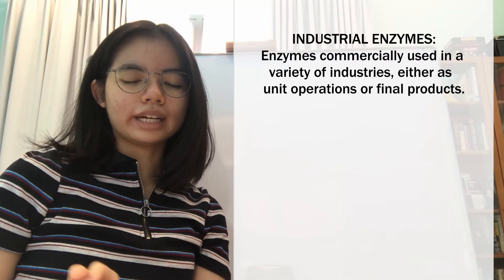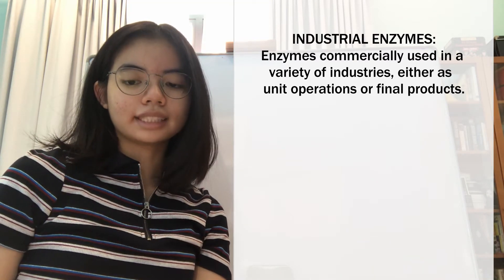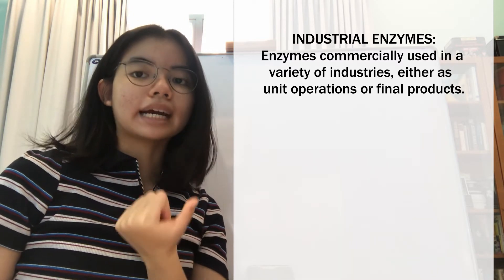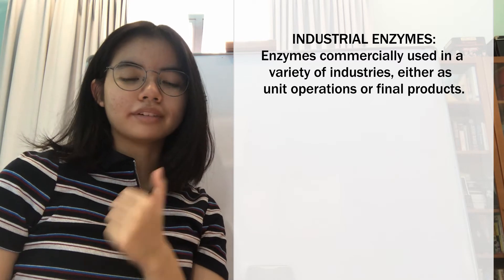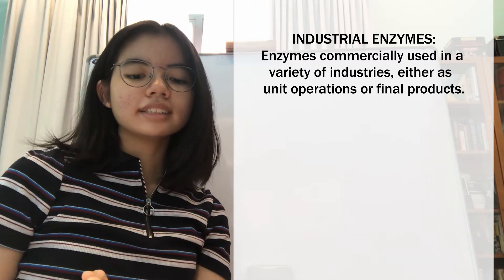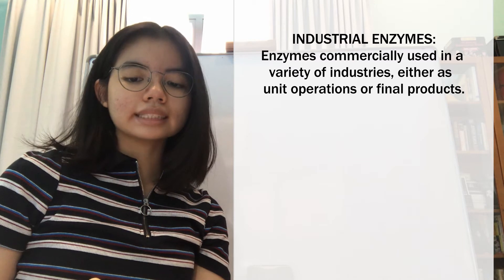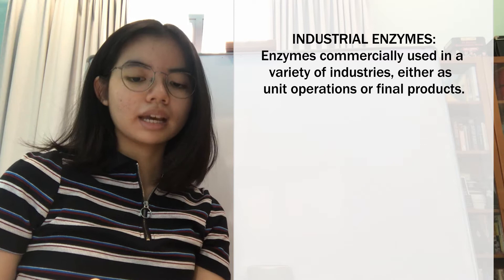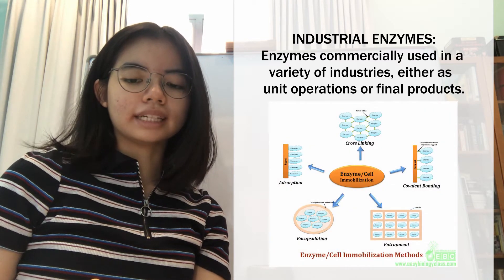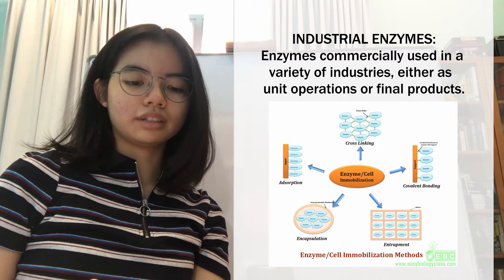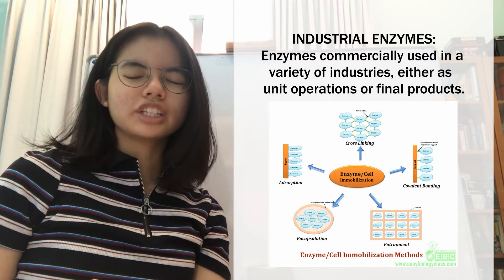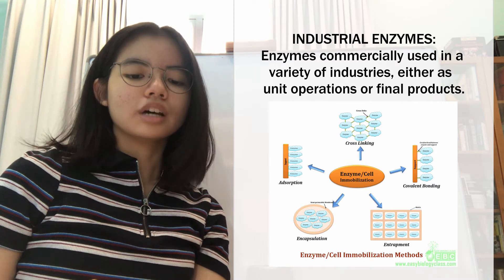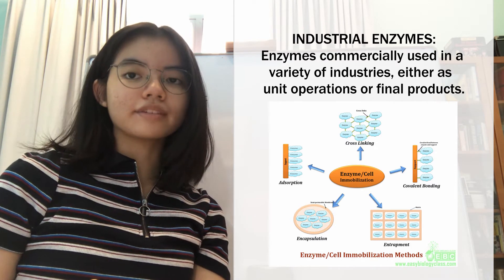Industrial enzymes are enzymes that are commercially used in a variety of industries. Enzymes can both be used as unit operations, meaning they form a basic step in the reaction process, or they can be the final product. Now let's discuss enzymes as a unit operation in which the enzyme catalyzes the main process, a key feature of industrial biotechnology. The enzyme must first be immobilized onto an inert solid material which provides it with increased resistance to changes in temperature or pH, and also allows it to be easily separated from the products to be reused later on, increasing efficiency.